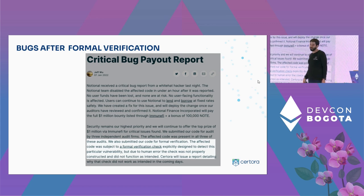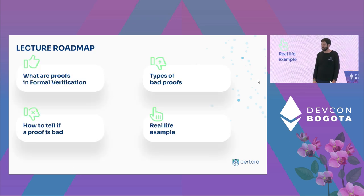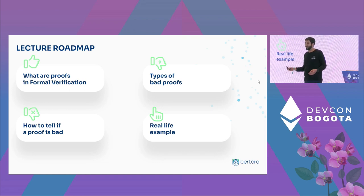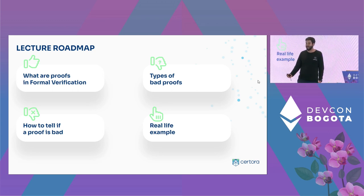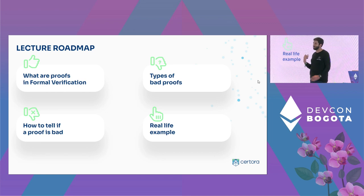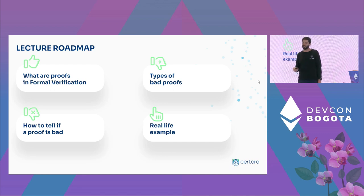In this lecture, we're going to see how that is possible, how it happens, and how we can prevent that. The lecture is going to be divided into a few different parts. At first, we will say what is formal verification, what are the proofs that you get out of it, and what does it mean for a proof to be bad. Then we will showcase two different types of bad proofs and show you how you can sometimes tell if a proof is bad or not. At the end, we'll show you a real-life example and delve into it deeply.